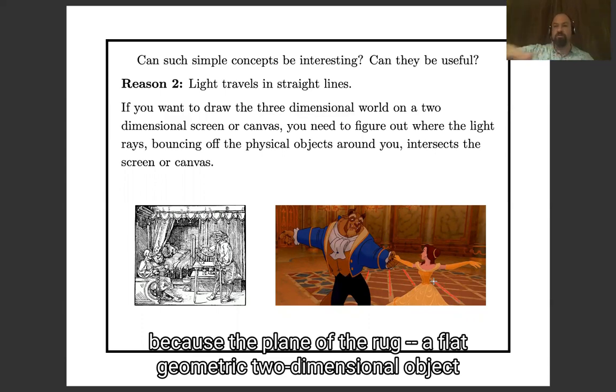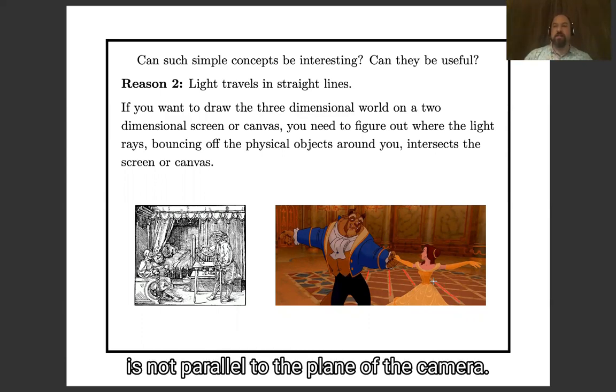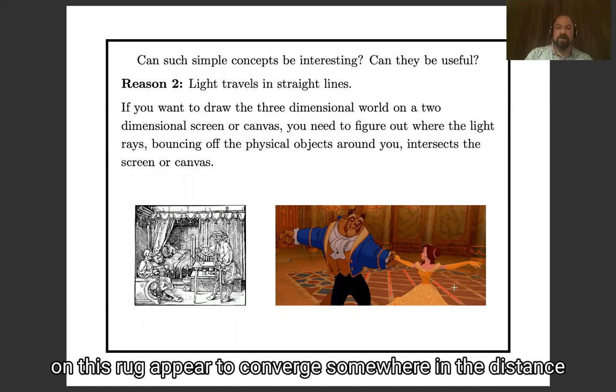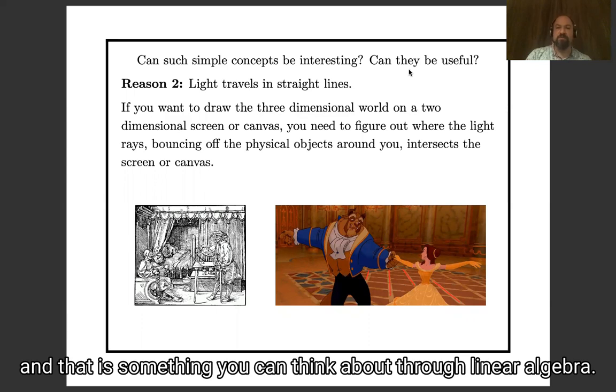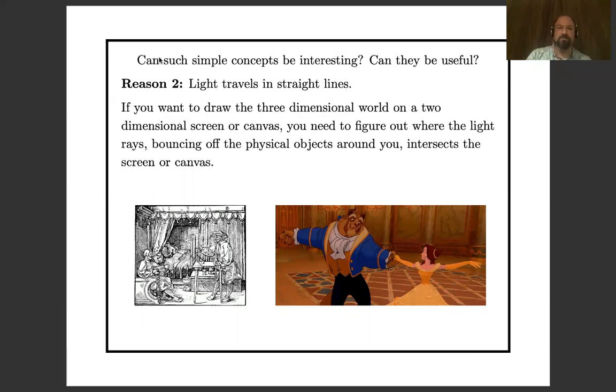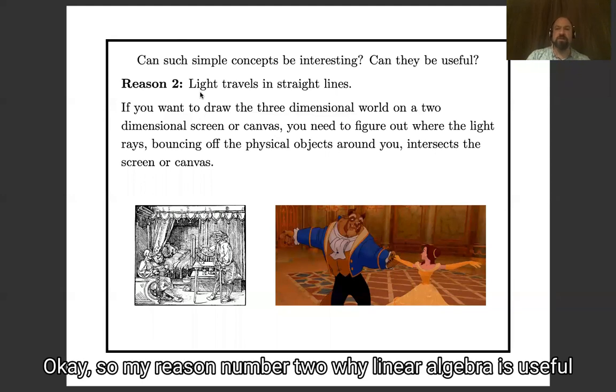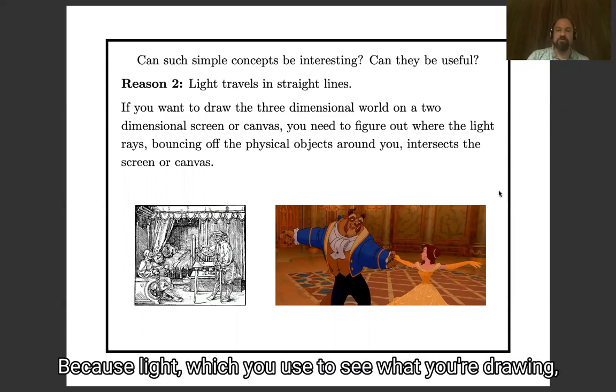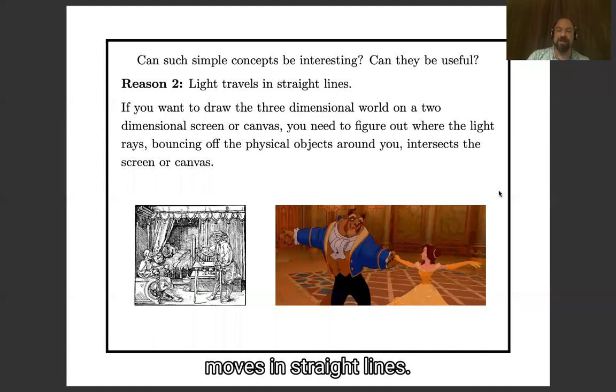Because the plane of the rug, a flat geometric two-dimensional object, is not parallel to the plane of the camera. And that means parallel lines on this rug appear to converge somewhere in the distance. And that is something you can think about through linear algebra. So my reason number two why linear algebra is useful is that it comes up whenever you want to draw things, because light, which you use to see what you're drawing, moves in straight lines.